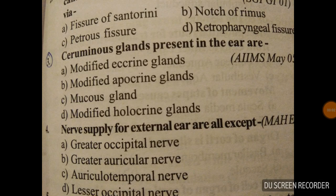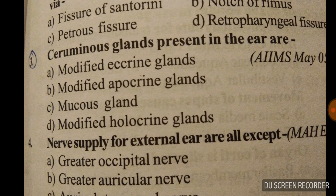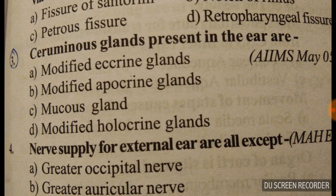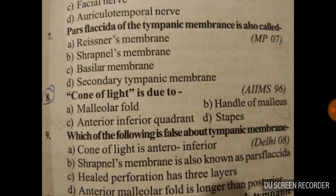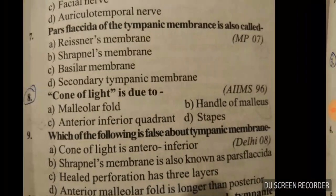Good evening doctors, welcome again. Today we are going to discuss some ENT MCQs. Question number three: ceruminous glands present in the ear are modified apocrine glands. That is the answer to question number three.